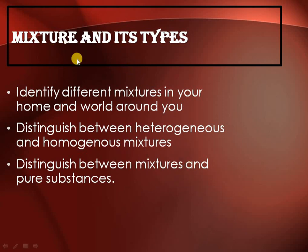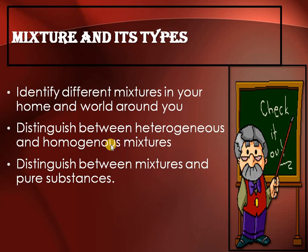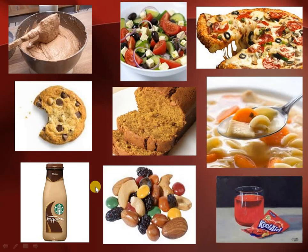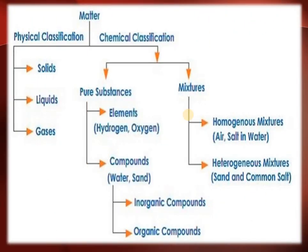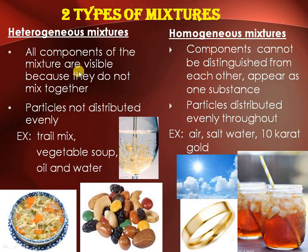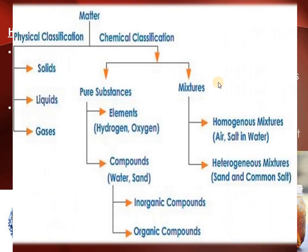So we have finished with our mixtures, their types — what are heterogeneous and homogeneous. Now we will discuss what is the difference between mixture and compound. Heterogeneous mixtures have a visible boundary; homogeneous do not. Particles are not distributed evenly in heterogeneous mixtures; they are distributed evenly in homogeneous mixtures.